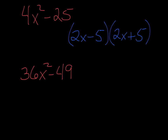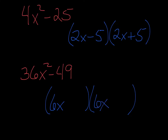Moving on to the next one: two terms, subtraction sign in between them, and you can take the square root of both terms. So it is difference of squares. Set up two sets of parentheses. Square root of 36x squared is 6x — write that in both parentheses. Square root of 49 is 7. One gets a plus, one gets a minus.